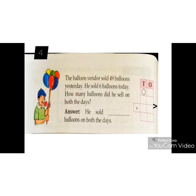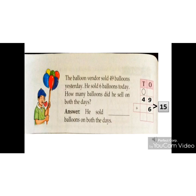Write down 49 in the second box. 49 is 4 tenths and 9 ones. Below 49, write down 6. 6 is only a one digit number. We will write it under ones place. Now, add the ones place first. Numbers are 9 plus 6, which is equal to 15. 15 is 1 ten and 5 ones. Carry forward 1 and write down 5 under ones place. Now, add the tenths place. Numbers are 1 plus 4, which is equal to 5. So, the sum of 49 and 6 is 55.